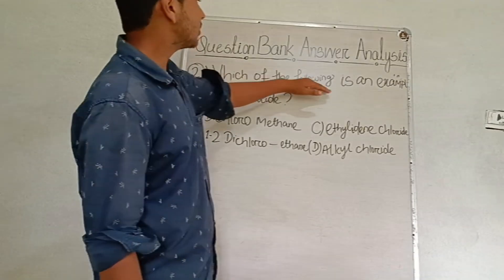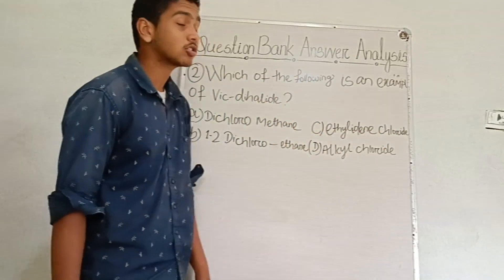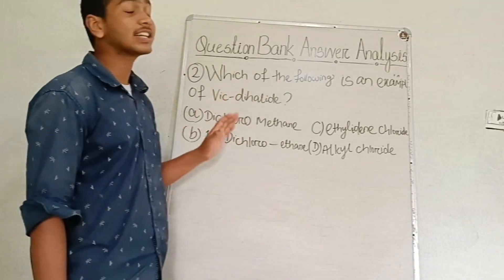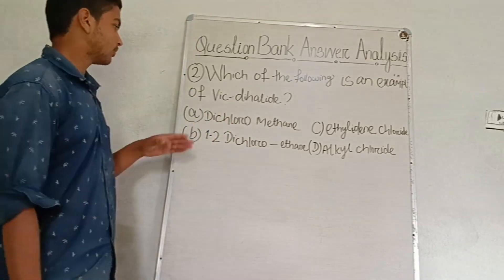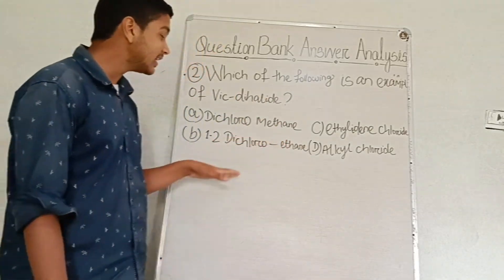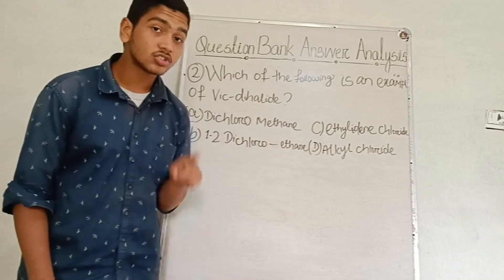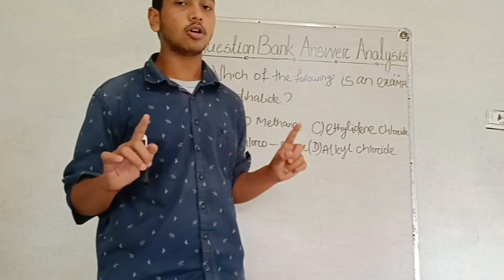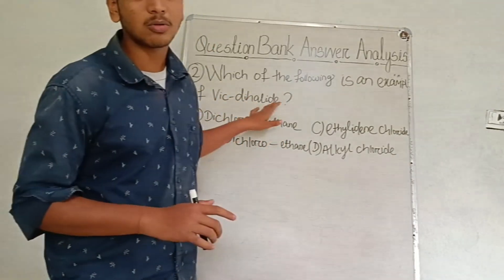Which of the following is an example of vicinal dihalide? Which of the following is an example of vicinal dihalide? So here I am talking about vicinal dihalide. The vicinal dihalides are in place, in which the backbone is the hydrocarbon body.